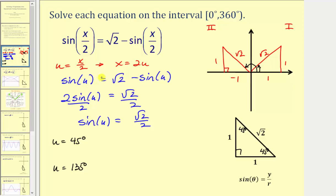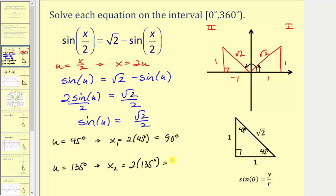Our goal is to find x, not u. If u equals 45 degrees, then x sub one equals two times 45 degrees, which equals 90 degrees. If u equals 135 degrees, x sub two equals two times 135 degrees, which equals 270 degrees. We could also check coterminal angles, but when we multiply by two to find x, they fall outside the given interval.